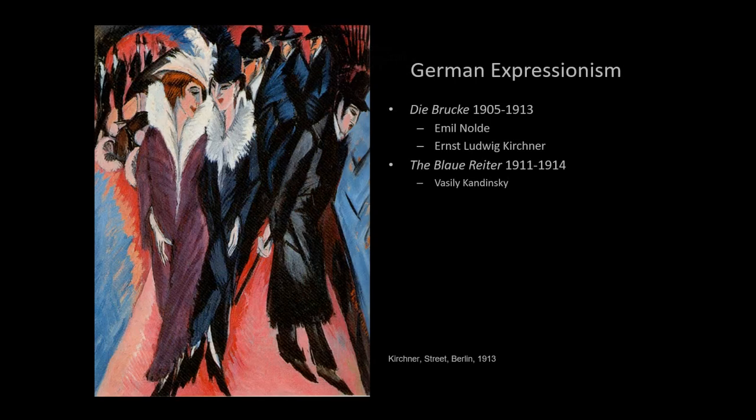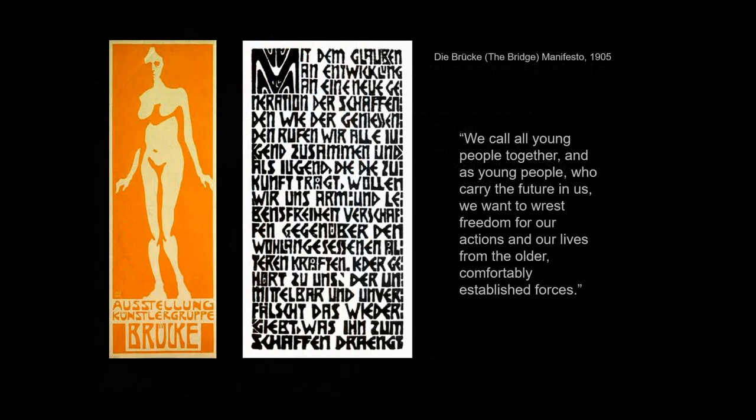Another group that adds to this push toward abstraction is the German Expressionists. They give us two camps: the first is Die Brücke, and the other is the Blue Rider. Let's talk first about Die Brücke — Die Brücke means 'the bridge.'